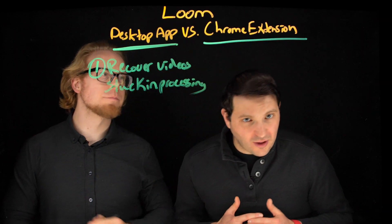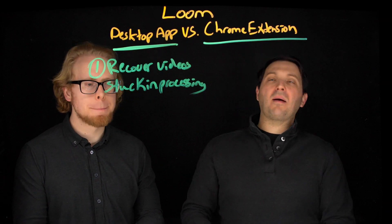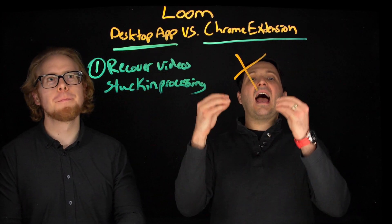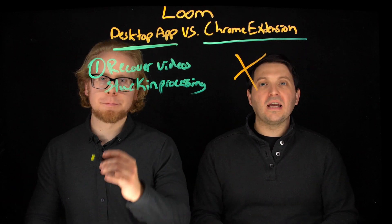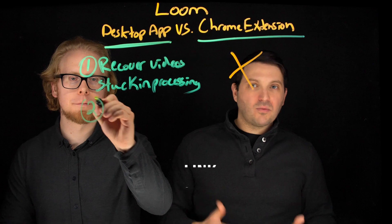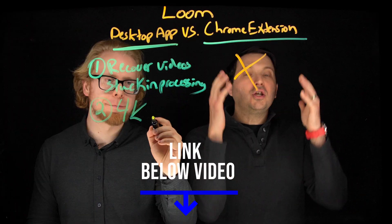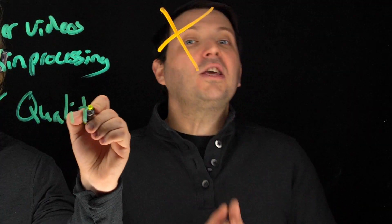That is a big one. Another big thing about the desktop app versus the Chrome extension is that it has higher quality. The desktop app gives you higher quality. With the Loom Pro or paid version — which is linked below if you want to support us — you can record in 4K. With the Chrome extension, you cannot record in 4K.